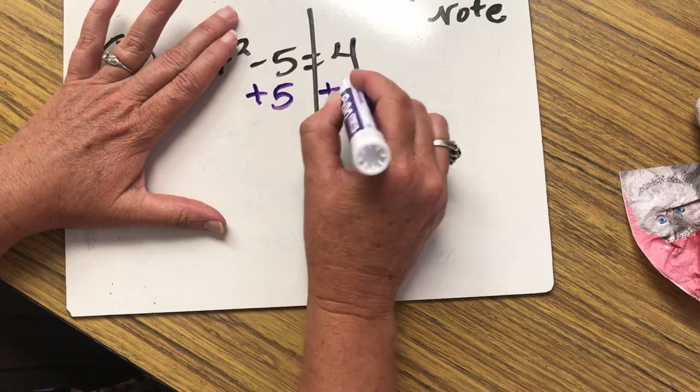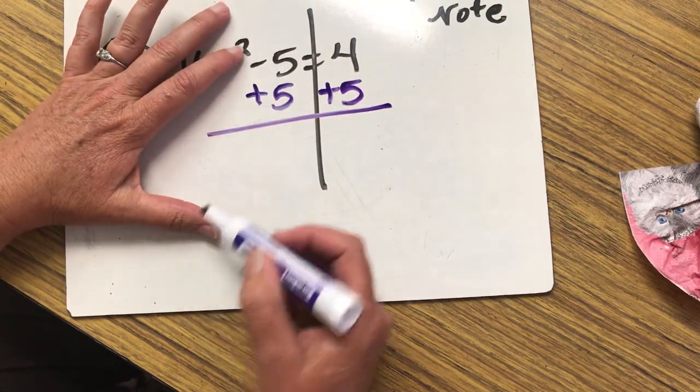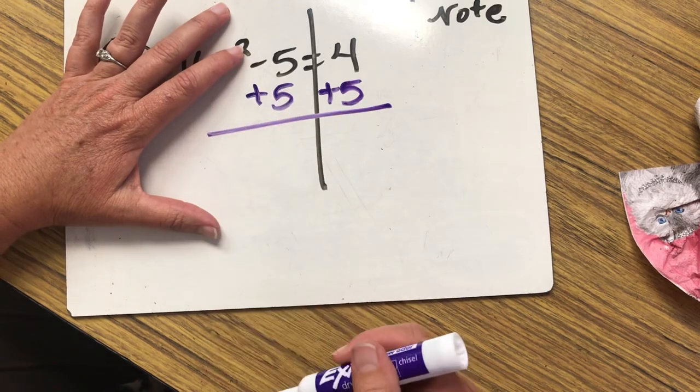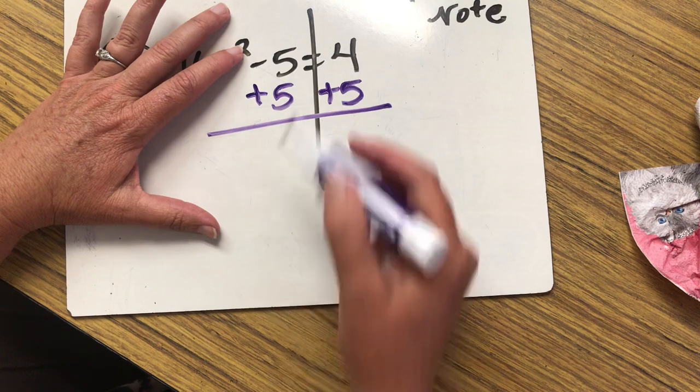I'm going to cover the variable. I'm going to do the opposite of what's sitting to the right of that variable. So I'm going to do the opposite of minus 5, which is add 5 to both sides because whatever we do to one side, we do it to the other.